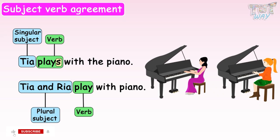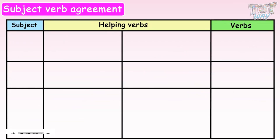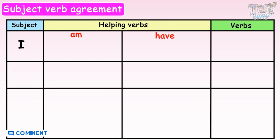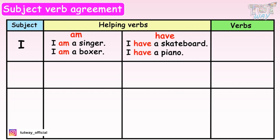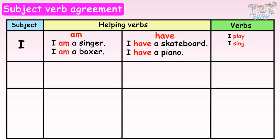Now we will learn various rules on subject-verb agreement. If the subject is I, the helping verbs am and have are used. For example: I am a singer. I am a boxer. I have a skateboard. I have a piano. And no S or ES is used with the verb: I play, I sing, I hate, I like.